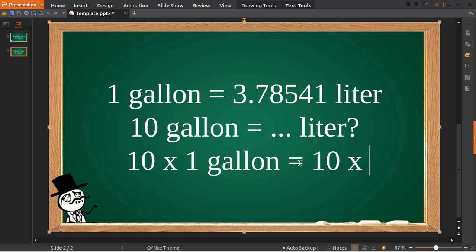Because this 10 will multiply it with something on the left, which is gallon, then this 10 that I put on the right we must multiply it with something on the right, which is liter.